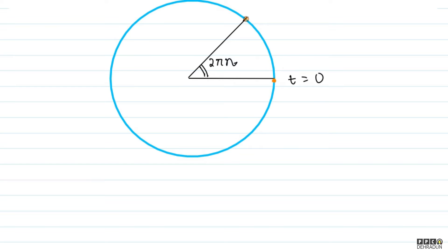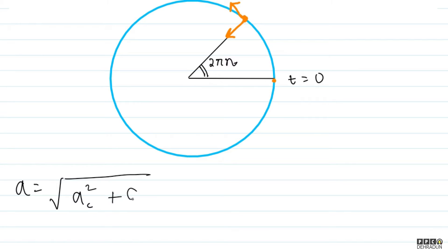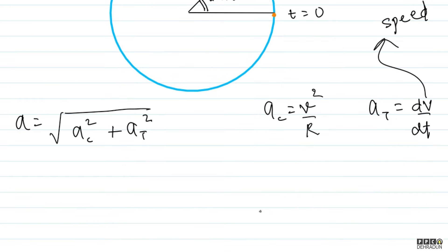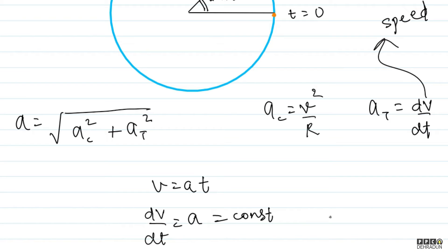Our target is to find the net acceleration at this moment. There is centripetal acceleration towards the center, and since the speed is increasing there is also tangential acceleration. So net acceleration = √(ac² + at²), where ac = v²/r and at = dv/dt. Since v = at, we get at = dv/dt = a, which is constant. So tangential acceleration is constant with value a.